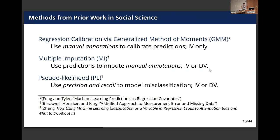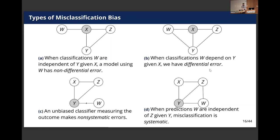In our paper we compared our method, pulled from the biostatistics literature, to other methods social scientists have proposed for the same problem: regression calibration, which we're calling GMM after their estimation technique; multiple imputation, which tries to predict missing values in one step and analyze in a second step rather than doing correction and estimation in one step; and pseudo-likelihood, which is a similar idea to ours but doesn't use the validation data for modeling — it just uses precision and recall.